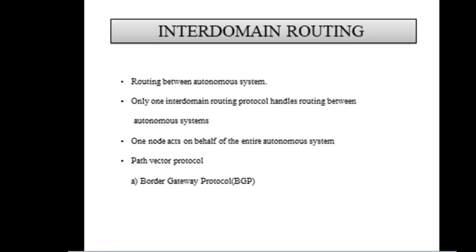The second type of routing protocol is inter-domain routing. Inter-domain routing protocol is defined as the routing between autonomous systems. Only one inter-domain routing protocol handles routing between autonomous systems. In inter-domain routing, one node acts on behalf of the entire autonomous system. Inter-domain routing uses the path vector protocol, in which the Border Gateway Protocol is used.